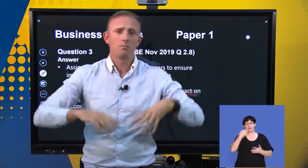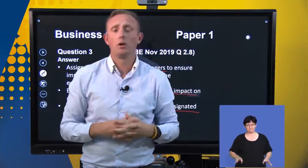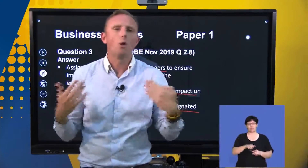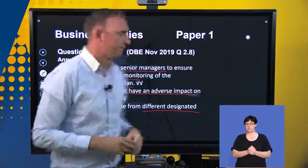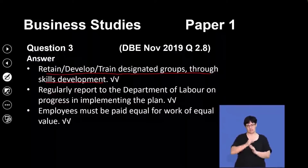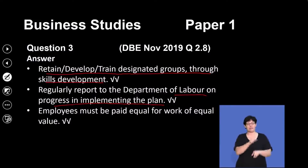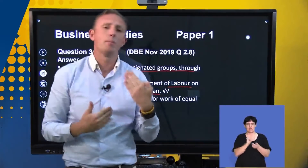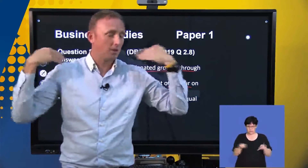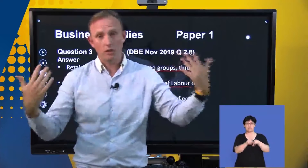Eliminate barriers that have an adverse impact on designated groups and accommodate people from different designated groups — make sure everyone feels welcome and can be accommodated. If you look at a lot of government buildings, there will be ramps or special elevators so that people who are disabled can access the office and no one is left out. We have to retrain, develop and train designated groups in skills development, regularly report to the Department of Labour on progress, and employees must be paid equally for equal value of work — just as men and women in sports tournaments now get paid an equal amount for doing the same work.